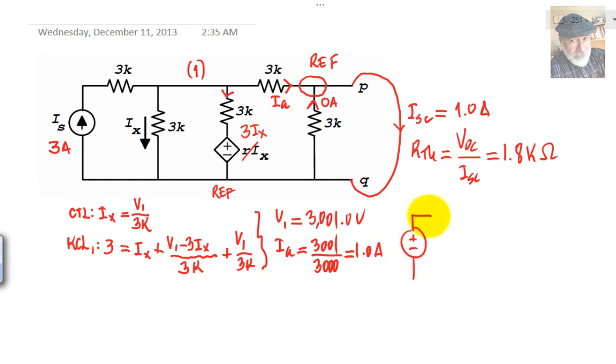And we're ready to draw the Thevenin circuit between nodes P and Q. This is P, and this down here is Q. The resistance is 1.8 kilo ohms, and the voltage, Thevenin voltage, is 1.8 kilo volts. And that is the solution to the second question. Thank you very much.